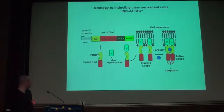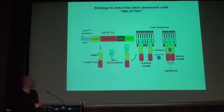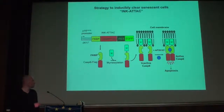The INK-ATTAC transgene is driven by a P16 promoter that is only transcriptionally active in P16-positive senescent cells. This transcribes Caspase 8, which is initially inactive. By adding a drug — AP20187 — the Caspase dimerizes, becomes active, and leads the senescent cell to die.